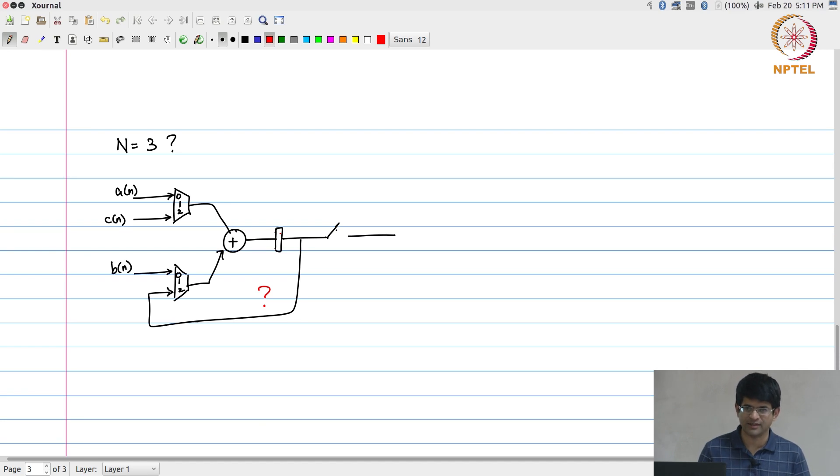So, if I want correct functionality what I will actually need to do over here is to say I need to add one more register. Now, what will happen is at s equal to 0 this will get a n plus b n, at s equal to 1 this will get a n plus b n, and at s equal to 2 this will get a n plus b n